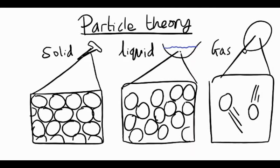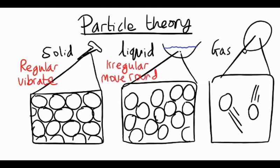So let's talk about that movement and arrangement. In a solid, the particles are regularly arranged and they vibrate around a fixed position, which means they can't flow. Whereas in a liquid, the particles are irregularly or randomly arranged and they can move around each other.